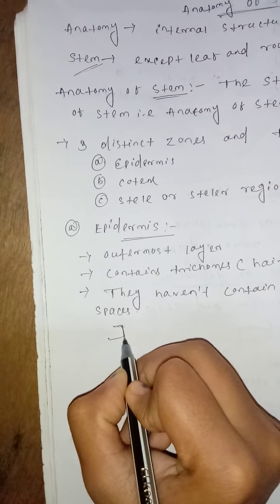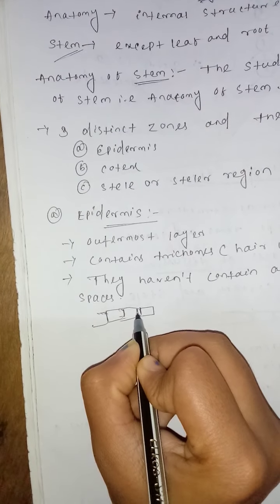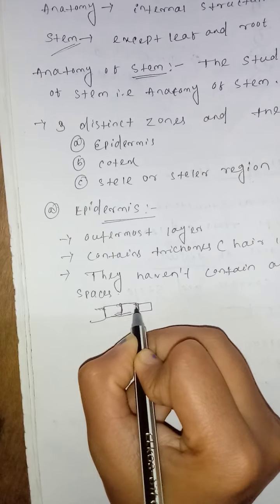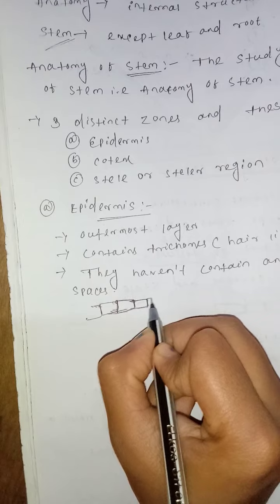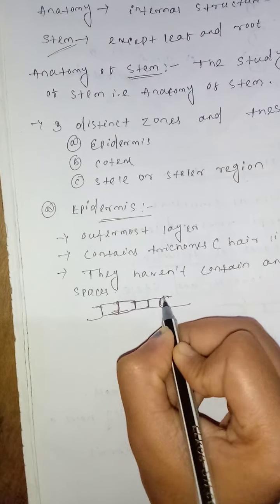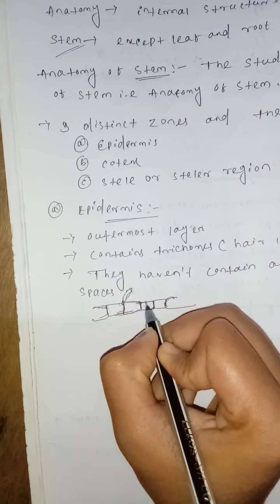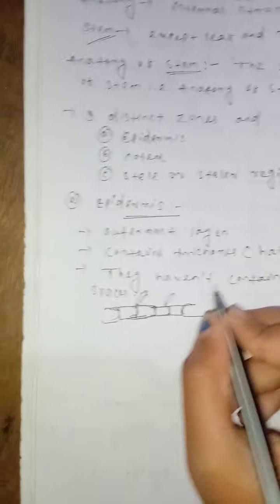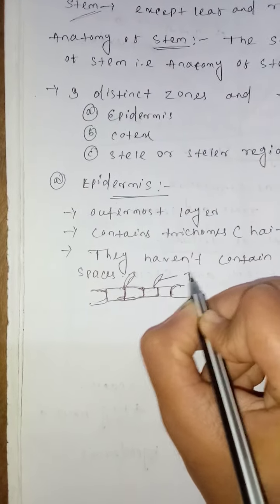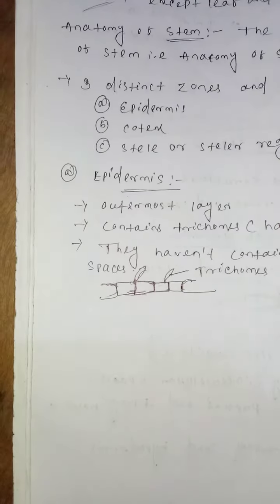Looking at this diagram, the epidermis cells have no intercellular spaces — they are attached to each other. This is the epidermis, and here trichomes are present. Trichomes means hair-like structures. This is all about epidermis.